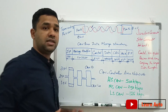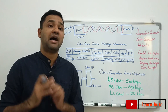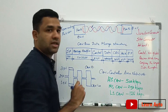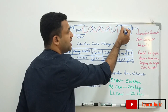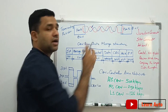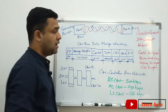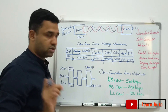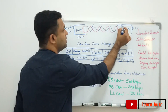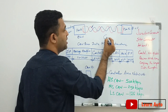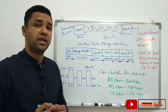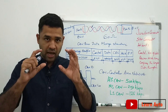If echo is not stopped, the signal will be damaged. The termination resistance absorbs the signal energy so that it does not reflect back into the original system.